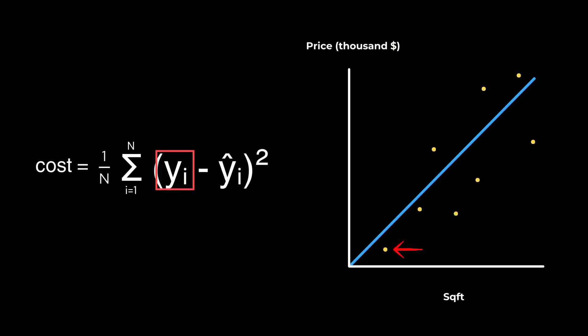This term is the actual value of y. This term is our predicted value of y. So this minus this is the gap between our guess and the real value. This means we want to add up all these gaps.